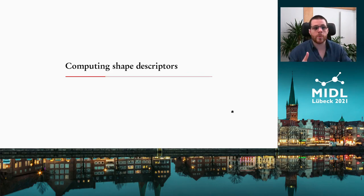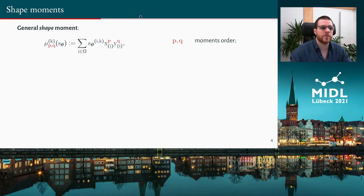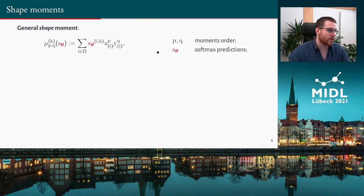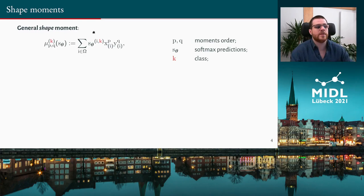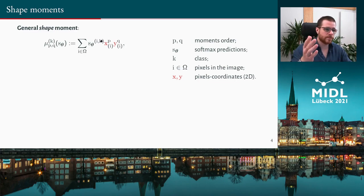Now let's focus on how we actually compute these descriptors. First, let's reintroduce general shape moments. Shape moments have two orders, P and Q, for the 2D case; for higher dimensional cases you would add more orders. They are computed on the network output S(θ), which are the softmax probabilities for a specific class — everything in this paper is compatible with multi-class settings. Y in Ω are all the pixels in the image, and X and Y are their coordinates on each axis. We can see shape moments as a sum of the weighted pixel coordinates raised to the power of P and Q, where each coordinate is weighted by the corresponding prediction for that pixel at that class.